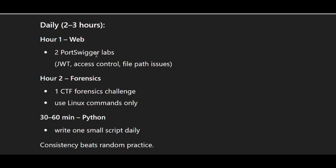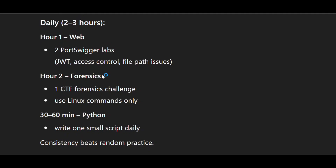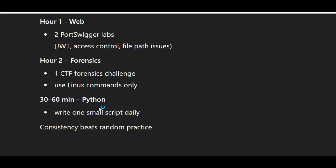Plan accordingly: spend 2 to 3 hours daily. The first half on web — like PortSwigger labs covering JWT, access control, and file path issues. The second hour on forensics — solve one CTF forensics challenge using Linux commands only. Then spend 30 to 60 minutes on Python scripting — write one small script daily. Consistency beats random practice, so be consistent.